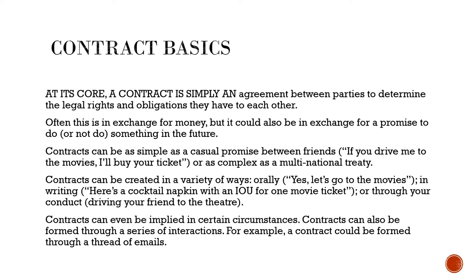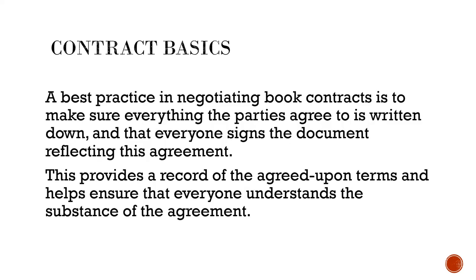Contracts can be created in a variety of ways: orally — yes, let's go to the movies — in writing — here's a cocktail napkin with an IOU for one movie ticket — or through your conduct, driving your friend to the theater. Contracts can even be implied in certain circumstances, or formed through a series of interactions, such as a thread of emails. A best practice in negotiating book contracts is to make sure everything the parties agree to is written down, and that everyone signs the document reflecting this agreement, providing a record of the agreed-upon terms.